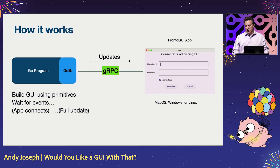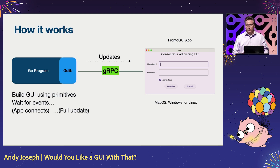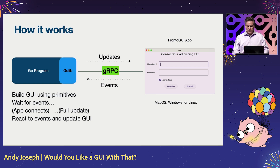Immediately, a full update is sent over to the application, and you see the GUI that you just constructed. Meanwhile, as the user is interacting with the GUI, events get streamed back to GoLib, where you can react to those inside of your program.